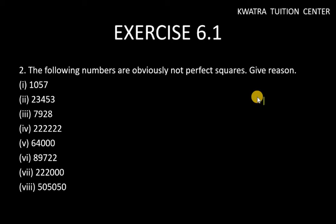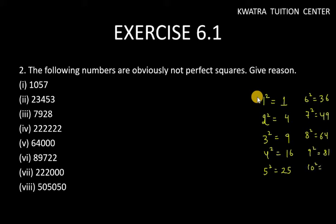First of all, let's tell you how squares end. 1 square is 1, 2 square is 4, 3 square is 9, 4 square is 16, 5 square is 25, 6 square is 36, 7 square is 49, 8 square is 64, 9 square is 81, 10 square is 100. So now let's see here,